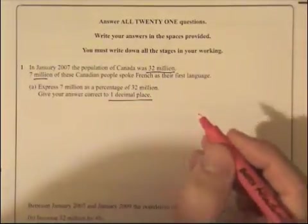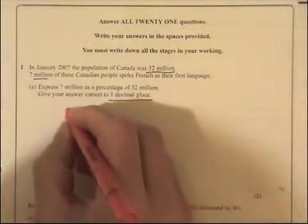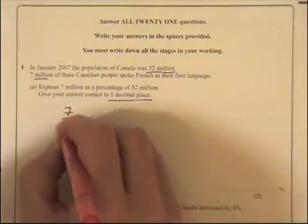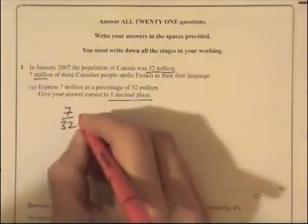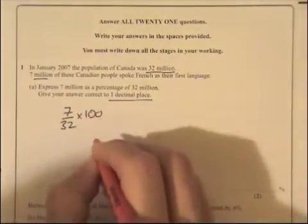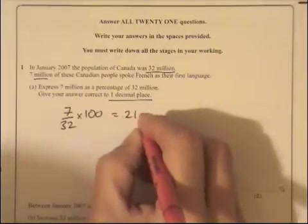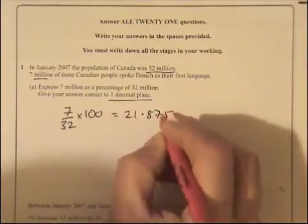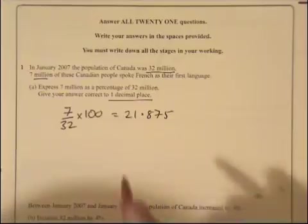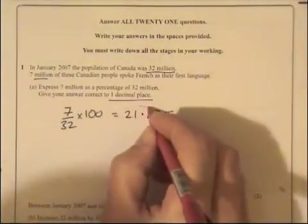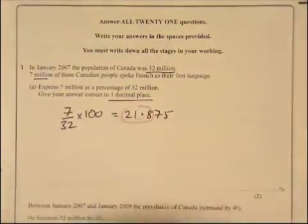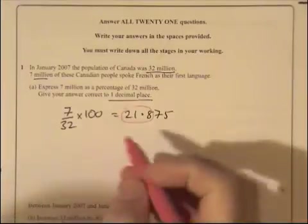This is a standard fraction, 7 million as a percentage of 32 million. As a fraction, it's 7 over 32. To turn that fraction into a percentage, it's just going to be times 100. Press the buttons on your calculator, you get 21.875. The question asks for one decimal place. If I circle it so far as one decimal place goes, that is what I get, 21.8.